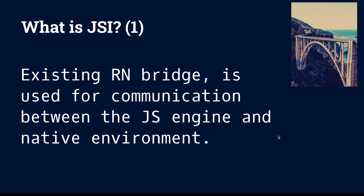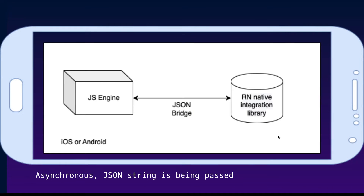Let's talk about the JavaScript Interface. We mentioned that JavaScript Interface is a replacement for the existing bridge. So how does the existing bridge work? The existing bridge works when we do a request from the JavaScript engine to the native side — we are converting the request into a JSON string, sending it, and asynchronously getting the response, again as a JSON string. So as you can see, it is asynchronous and JSON string-based.